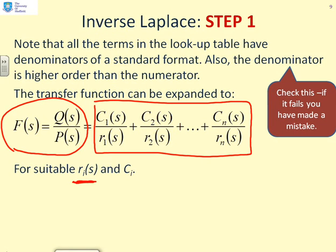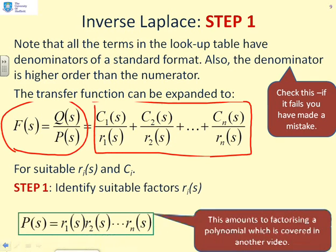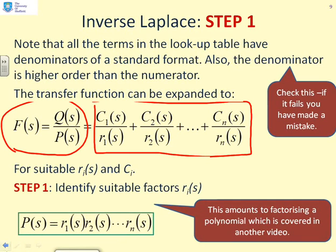Having done that simple check, what we're trying to do is make the original transfer function, Q over P, into this partial fraction form: c_1 over r_1 plus c_2 over r_2 plus dot dot dot up to c_n over r_n. The first step in this is to find suitable r_i. We can write P equals r_1 times r_2 all the way up to r_n. So the first step is to factorize the denominator or to find the poles. All we're asking you to do here is factorize a polynomial.